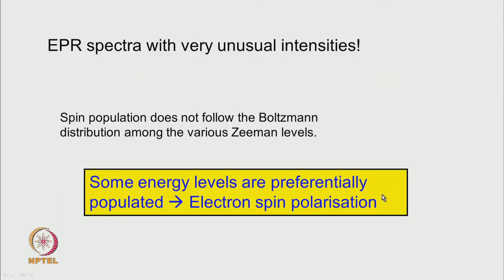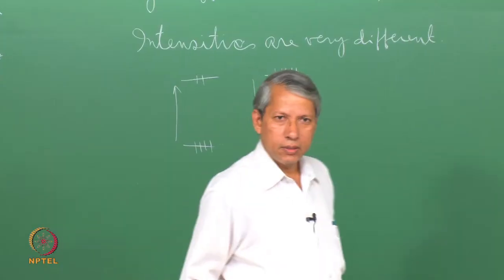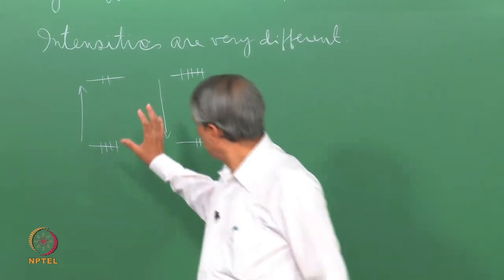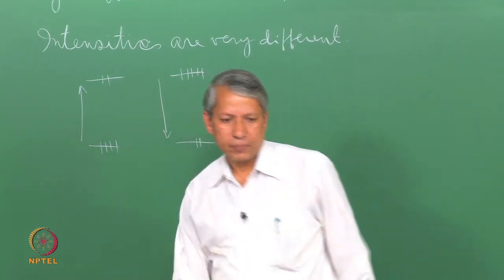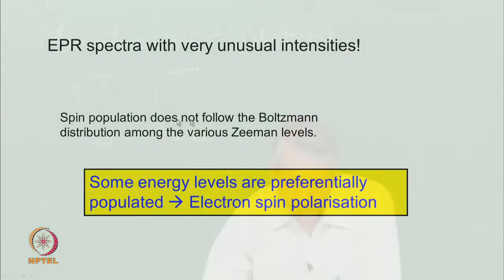We call radicals produced in selectively populated spin states as being in an electron spin polarized state. Electron spin polarization is the phenomenon we are observing here. Therefore, the spin populations at different Zeeman levels do not follow the Boltzmann distribution.